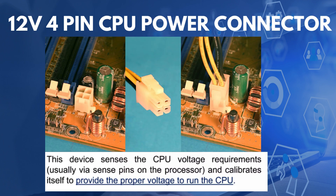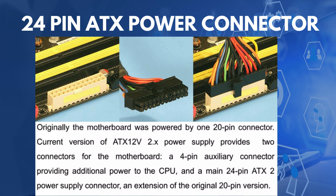The 12V 4-pin CPU power connector senses the CPU voltage requirements, usually via sense pins on the processor, and calibrates itself to provide the proper voltage to run the CPU. The 24-pin ATX power connector: originally the motherboard was powered by one 20-pin connector. Current ATX12V 2.x power supplies provide two connectors — a 4-pin auxiliary connector for additional CPU power, and the main 24-pin ATX power supply connector, an extension of the original 20-pin version.